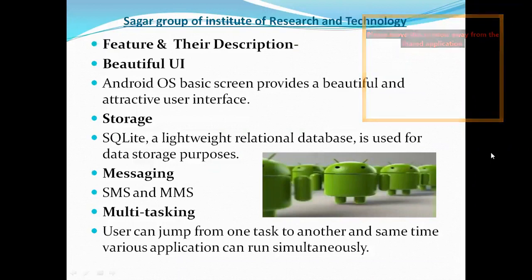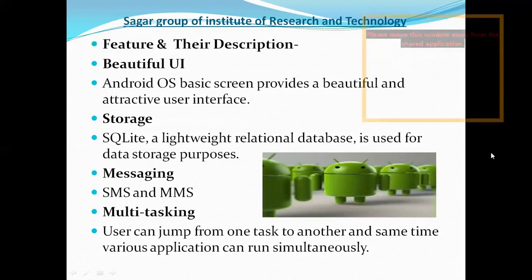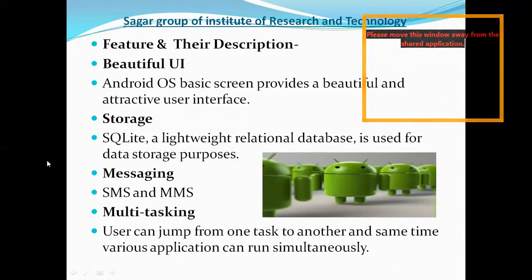You all know what features are. Features means that you are seeing the qualities of someone in front of you — what are the features, what are the main key points, what are the main qualities. The qualities and components which attract the user of the computer — this is called the features of the operating system.